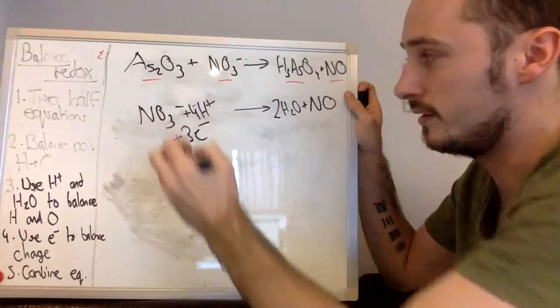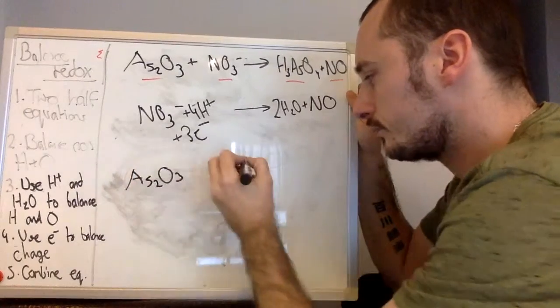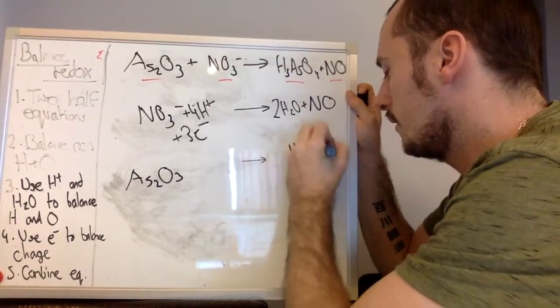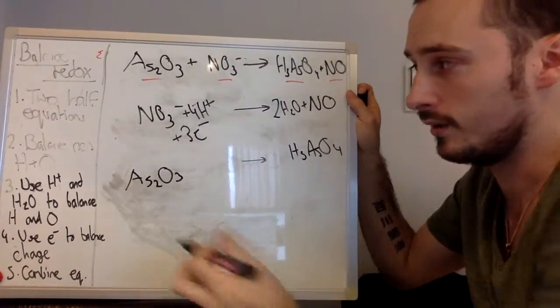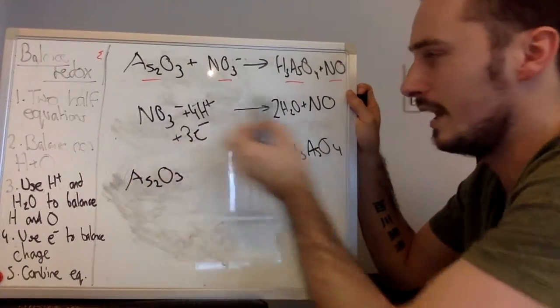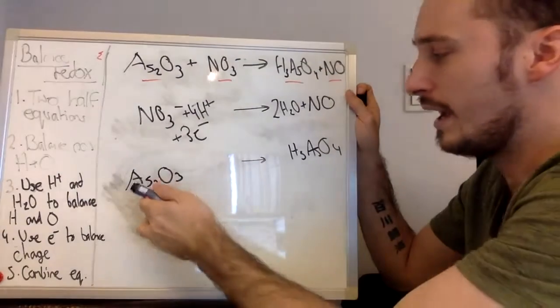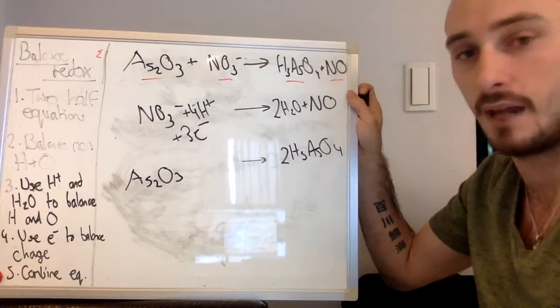Now we're going to balance the other equation. So As2O3 becoming H3AsO4. So the first thing you do, equation like this, balance the non-H and O things first. Up here, we balance the N first, then the O. Here, we're going to balance As. So As, we have two on this side, only one on this side, nice and straightforward, balanced.